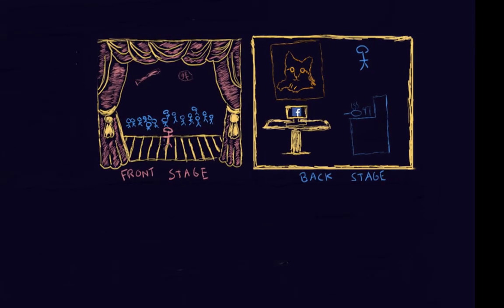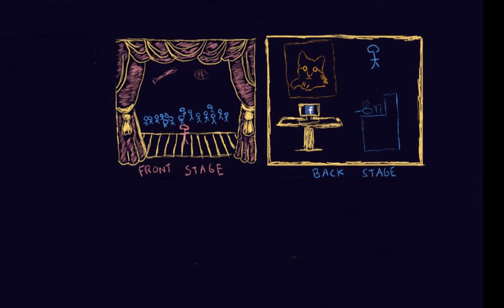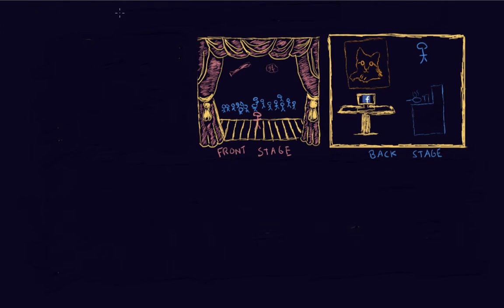The dramaturgical approach is broken down into two parts: a front stage and a back stage. The front stage is essentially a performance that you put on in a social setting, and the back stage is a place where you can just be yourself and the act is over. The tool we use to make ourselves presentable on the front stage is called impression management — our attempt to control how others see us, because we want to be viewed in a positive way.